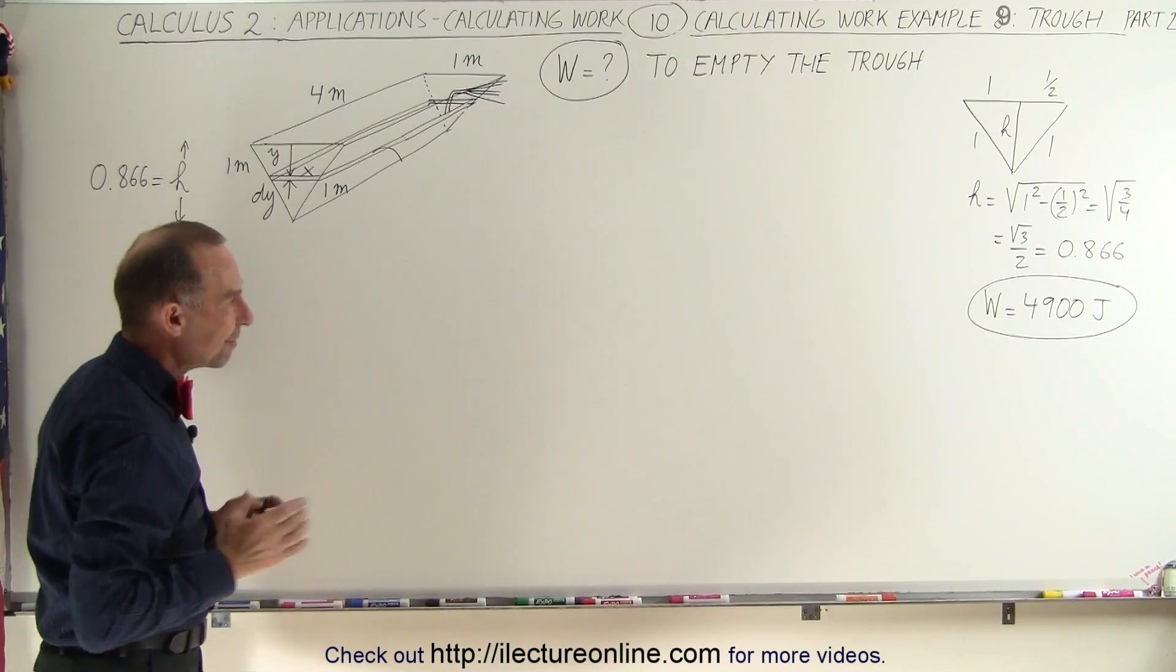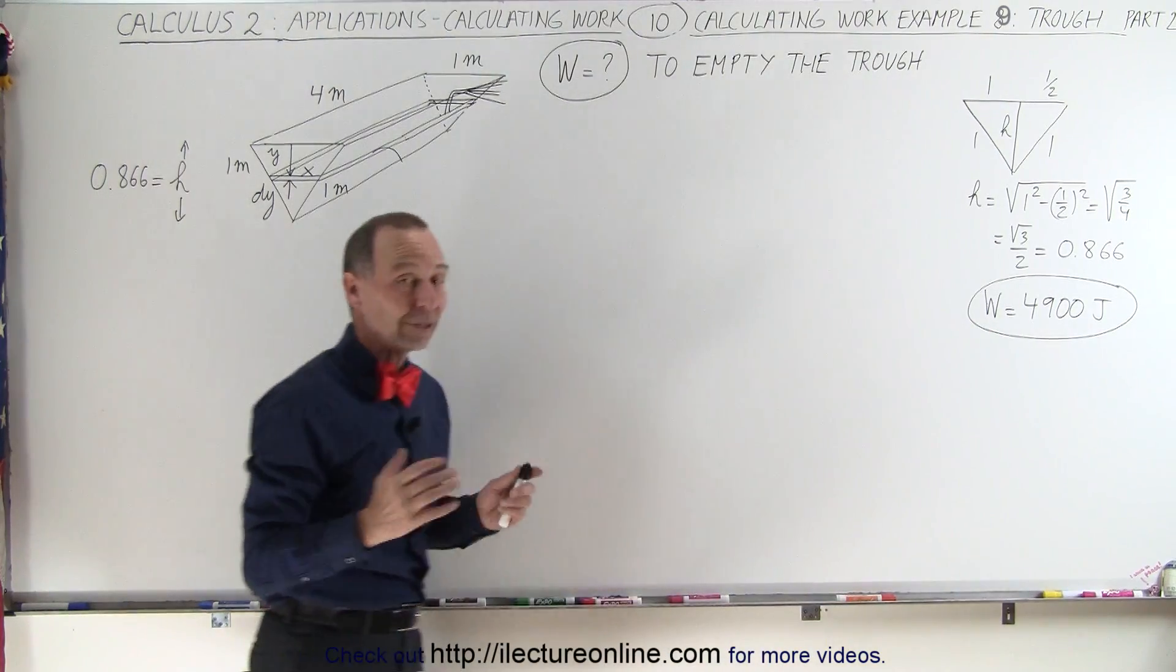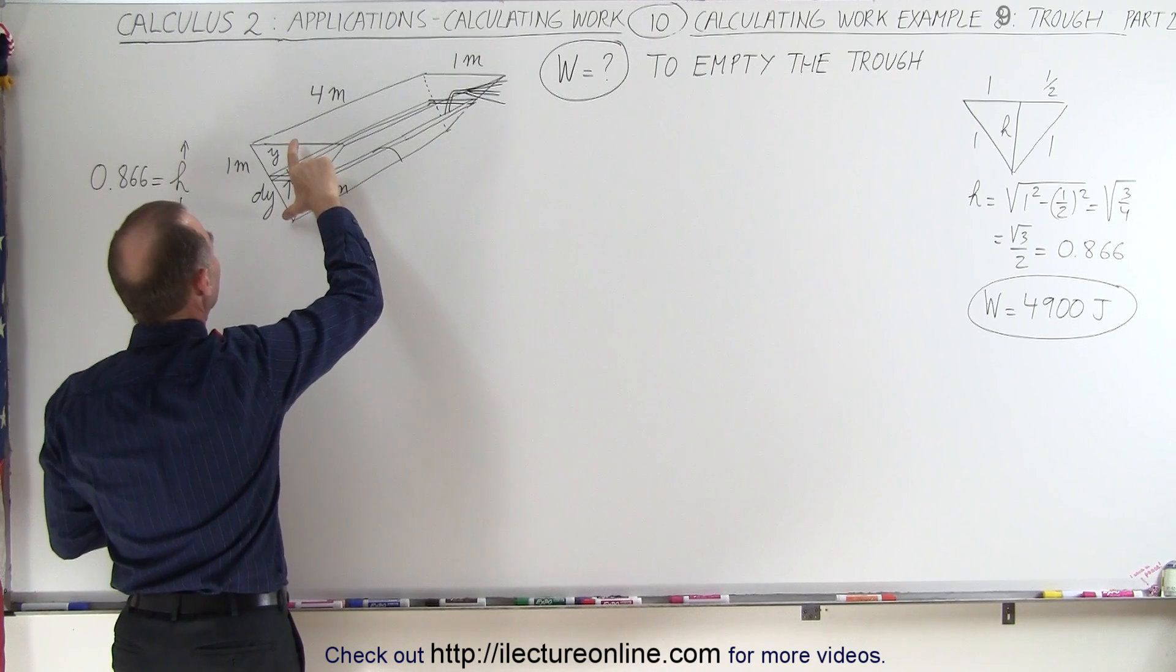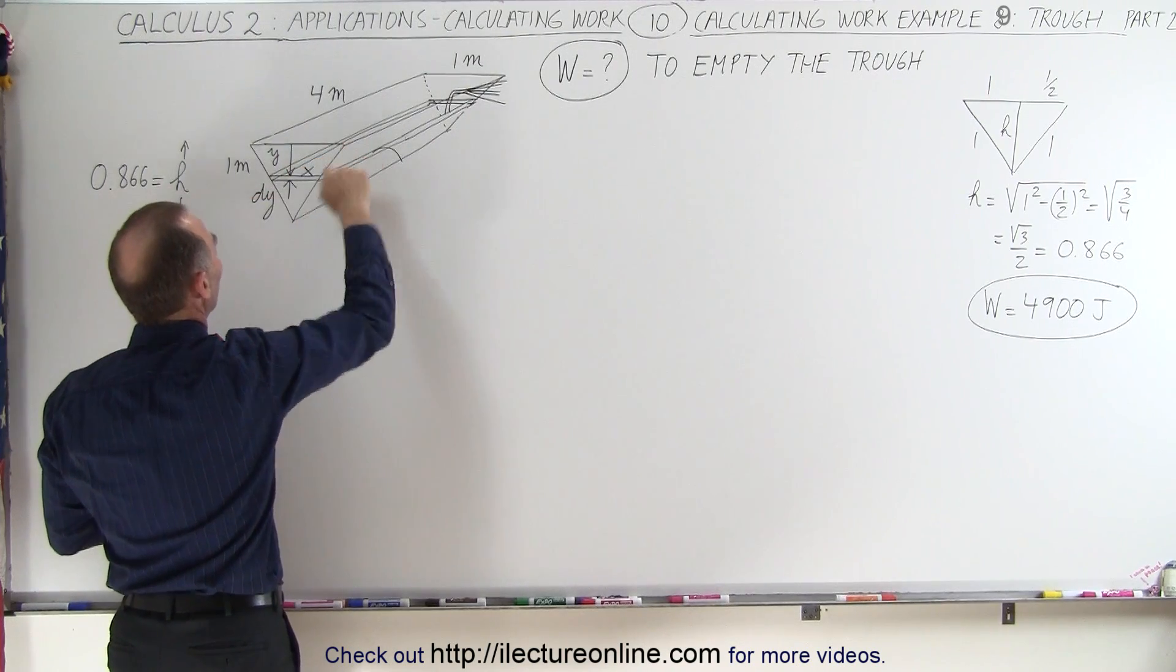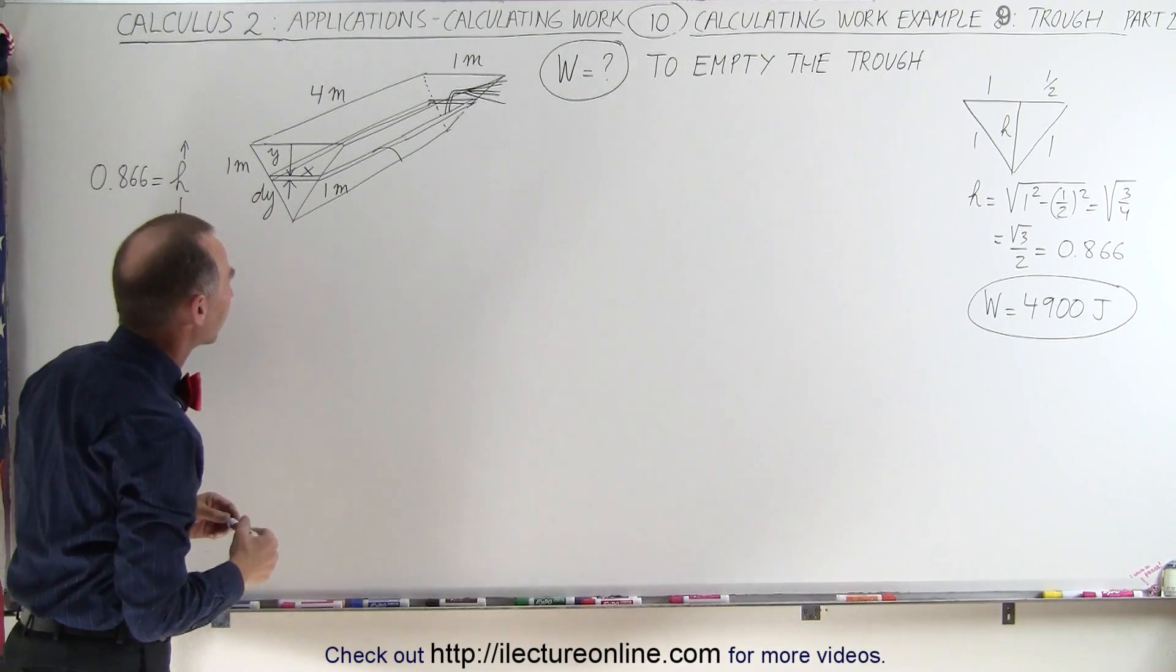The same answer can be found, and notice I wrote down the answer from the previous video, it was 4,900 joules to empty this trough, which is 4 meters long, 0.866 meters high, 1 meter on each side because the cross-sectional area is an equilateral triangle.